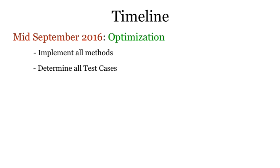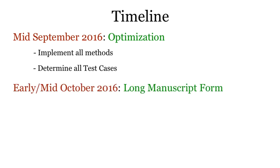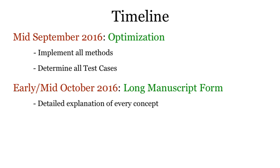I then started writing the long form of the manuscript, emphasizing details for every step. After all, I didn't know what kind of paper this was going to be — it could have been a conference paper, a journal paper, a transactions publication, or even a magazine. At this point, my professor recommended that I publish it in a conference, and so we decided on a suitable one for my work.